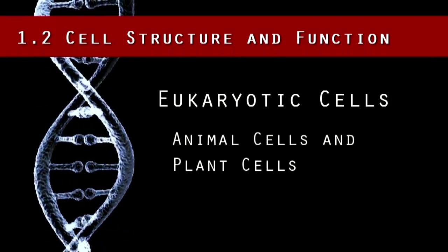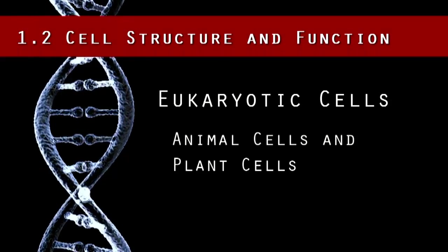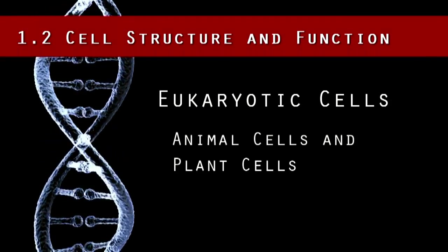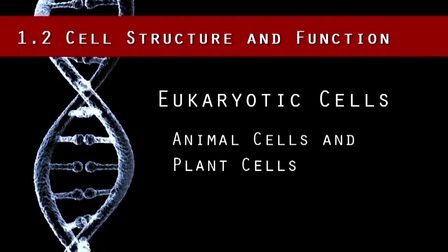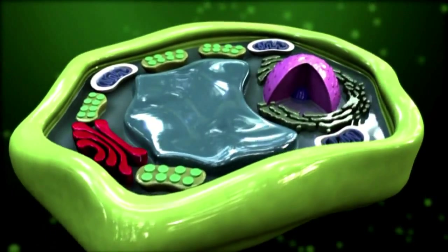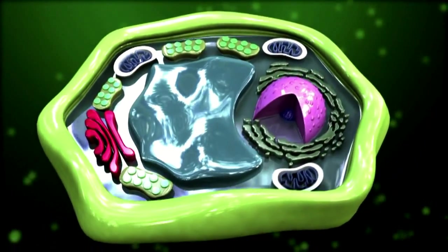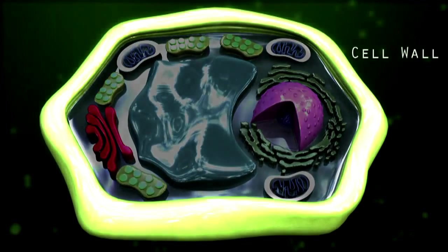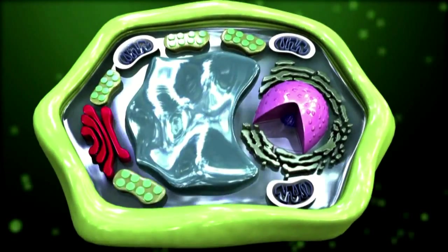Both types of cells are very similar but there are three distinct differences. First, plant cells have a cell wall surrounding the plasma cell membrane. Animal cells just have a cell membrane.